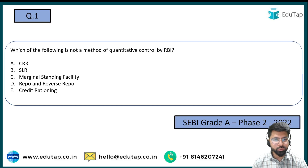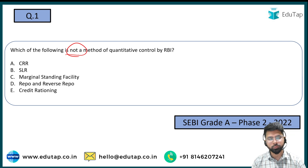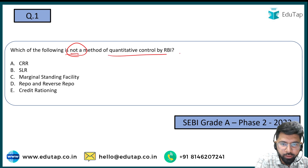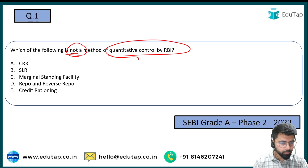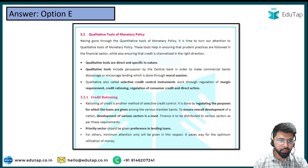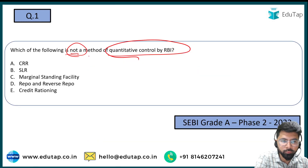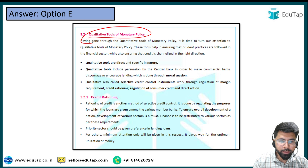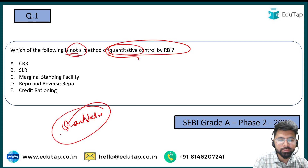Now, the first question from phase two 2022: which of the following is NOT a method of quantitative control by the RBI? The options are CRR, SLR, MSF, reverse repo, and credit rationing. This is a pretty easy question. The answer is option E — credit rationing. The question is asking about quantitative tools, so let's understand what exactly a quantitative tool is.